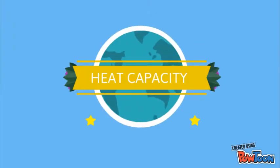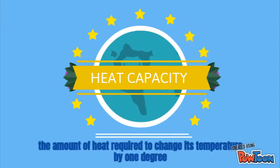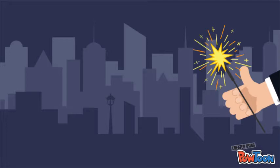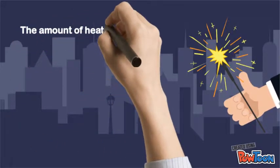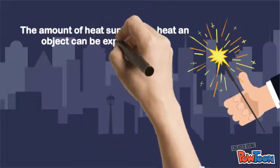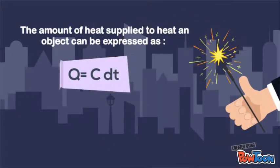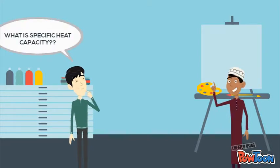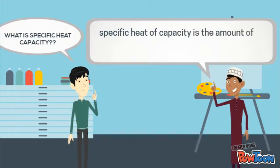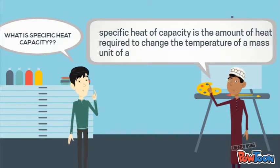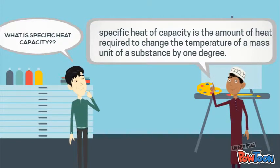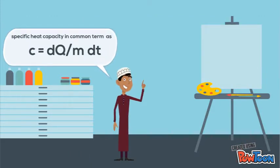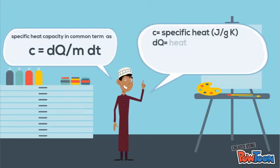Heat capacity is the amount of heat required to change its temperature by 1 degree. The amount of heat supplied to heat an object can be expressed as Q = C·DT. Specific heat capacity is the amount of heat required to change the temperature of a unit mass of a substance by 1 degree. Specific heat capacity is defined as C = DQ / (M·DT).